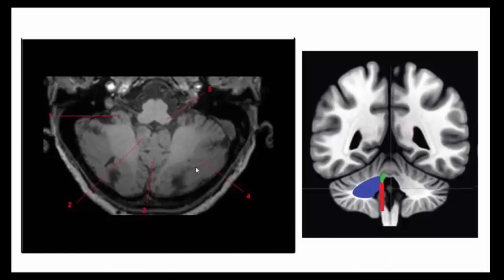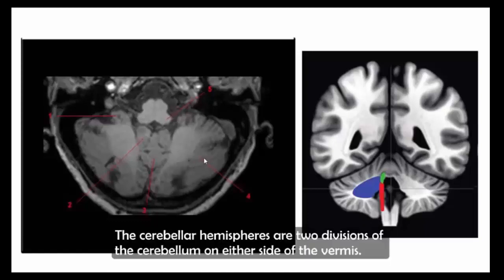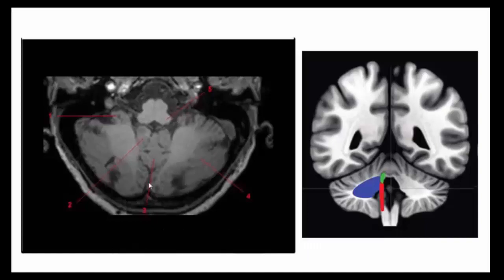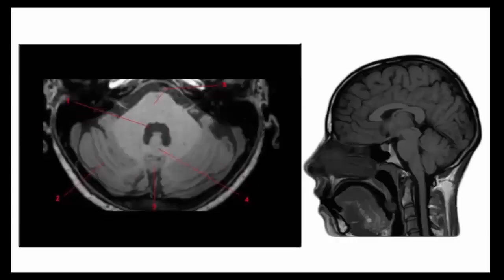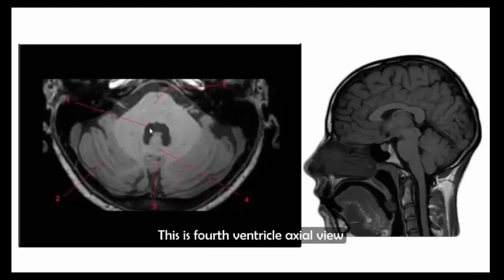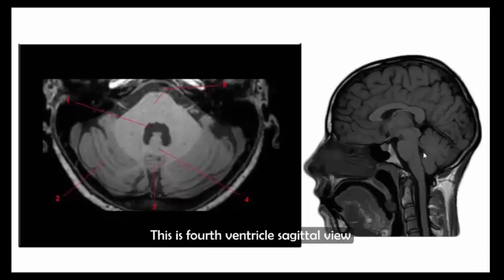The cerebellar hemispheres are two divisions of the cerebellum on either side of the vermis. They have a foliated cortex. This is the fourth ventricle on axial view and sagittal view.